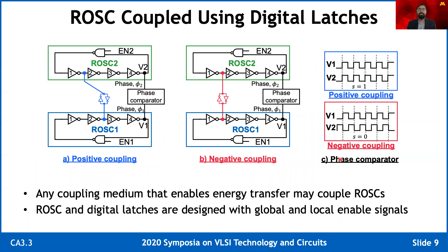Any coupling medium that enables energy transfer can be used as the coupling circuit. Here is an example of two ring oscillators coupled through a digital latch. This digital latch is inverting, so for positive coupling, we connected the latch between two opposite polarities. Intuitively, the positively coupled ring oscillators should have the same frequency and the same phase — if ring oscillator 1 has state 1, then ring oscillator 2 should also have state 1. On the other hand, for negative coupling, the digital latch can be connected between the same polarity. We still expect them to have the same frequency, but ring oscillator 2's state should be opposite to ring oscillator 1.